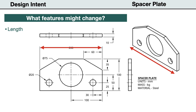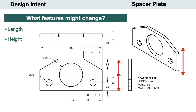First, the length may be changed to make it longer or shorter. Also, the height may need to be adjusted taller or shorter. And because the part is used as a spacer plate, the thickness will need to be variable to fit the application.